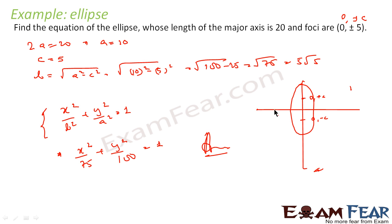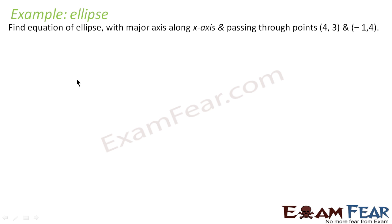It's very simple — we found a, b, and c, and then observed the foci. Since the foci were on the y-axis, we concluded the equation is of the form x²/b² + y²/a² = 1, and we have written that equation.